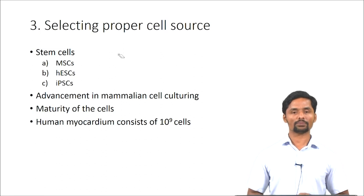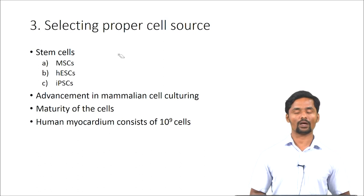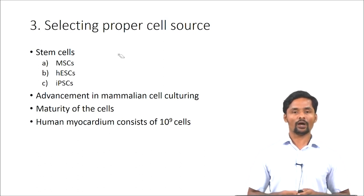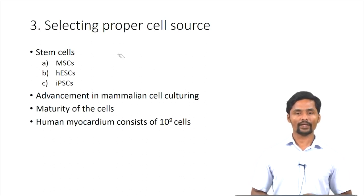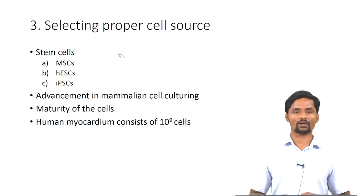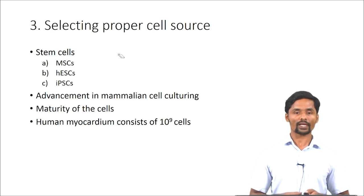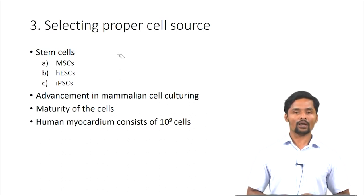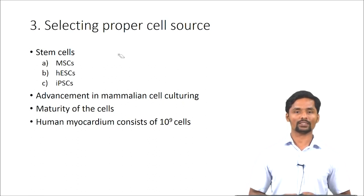Another problem is the maturity of these cells — stem cells largely differentiate into immature cells with variability in structure and function. Another challenge is producing clinically relevant numbers of cells. For example, the human myocardium consists of 10⁹ cells, and generating such a large number of cells is a challenge in tissue engineering.